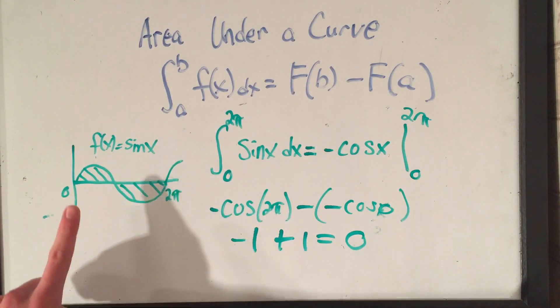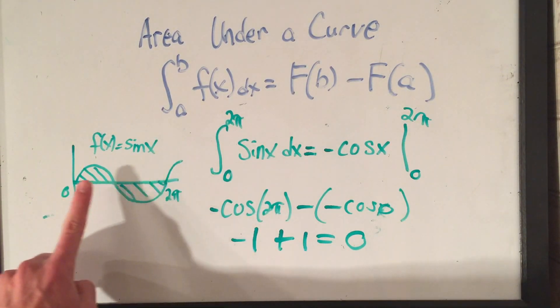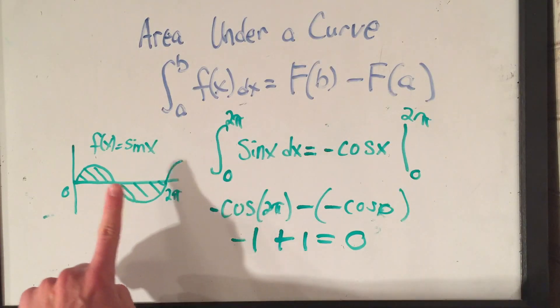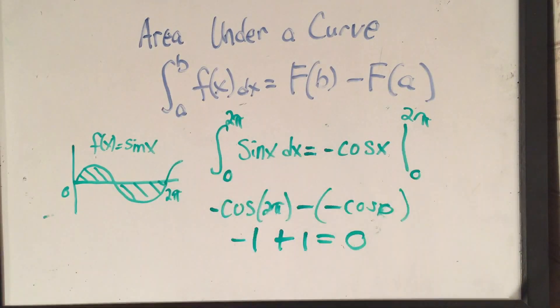I didn't draw it exactly symmetrical, but I've got a positive area here, and I have just as much negative area here. So when I add them together, I get zero total area.